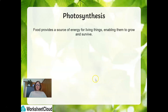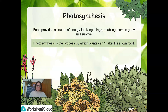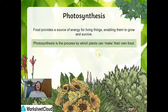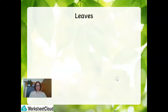Photosynthesis is when food provides a source of energy for living things, enabling them to grow and survive. Photosynthesis is the process by which plants can make their own food. Food provides a source of energy for all living things, which enables them to grow and survive — and photosynthesis is the process by which plants can make their own food.